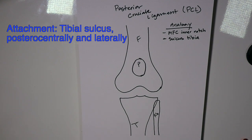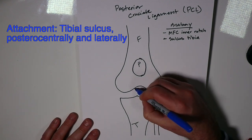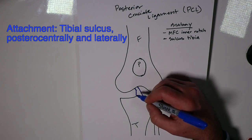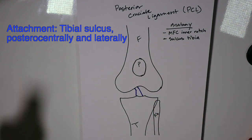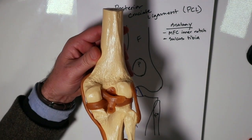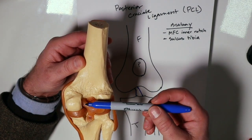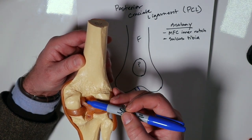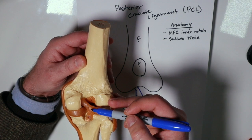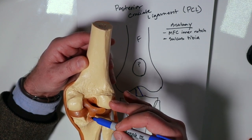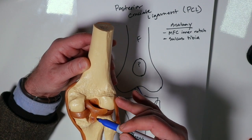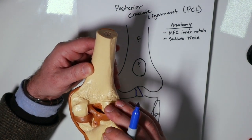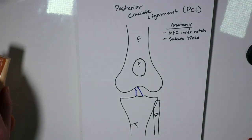So it starts on the posterior aspect of the inner medial femoral condyle and runs to the sulcus of the tibia. I have my knee model here as well. Looking at it from behind, it's along the inner aspect of the medial femoral condyle — this is a right knee model — and it runs centrally towards the tibia, inserting in the sulcus of the tibia below the articular surface, as well as on the posterior aspect of that lateral portion of the joint.